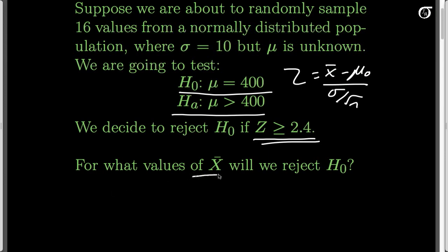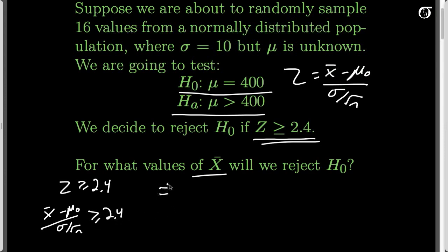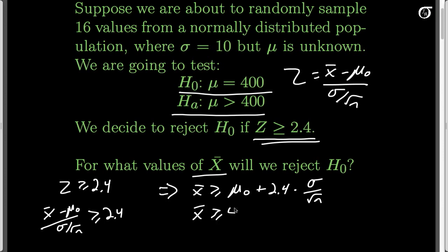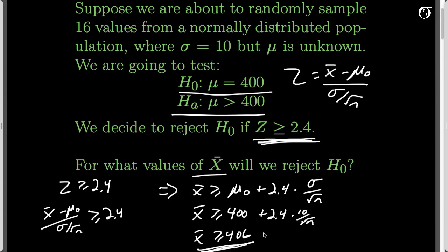For what values of x-bar will we reject the null hypothesis? We are rejecting the null hypothesis if z is bigger than or equal to 2.4, and since z equals x-bar minus mu-naught over sigma over the root of n, that must also be bigger than or equal to 2.4. Solving, x-bar must be bigger than or equal to mu-naught plus 2.4 times sigma over the square root of n — that's 400 plus 2.4 times 10 over the square root of 16, giving x-bar greater than or equal to 406.